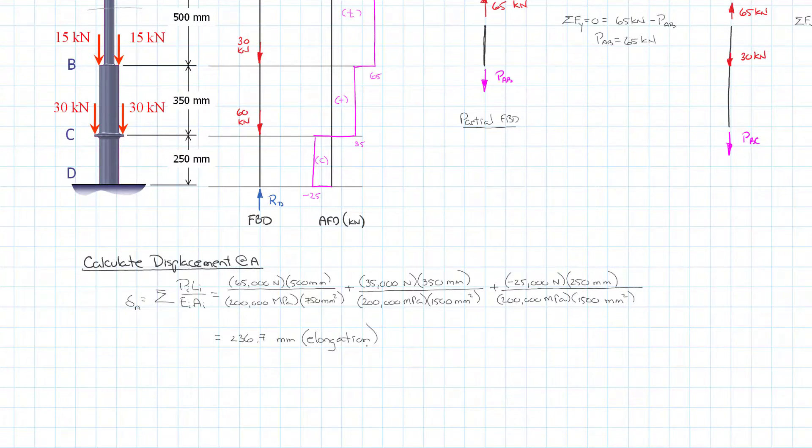The last question that the problem asks is what is the relative displacement between B and C. One thing I want to point out is in some ways we've already calculated that because that's right in here, that is the displacement between B and C. So all we have to do is isolate that displacement. Displacement B relative to C equals the sum of PL over EA.